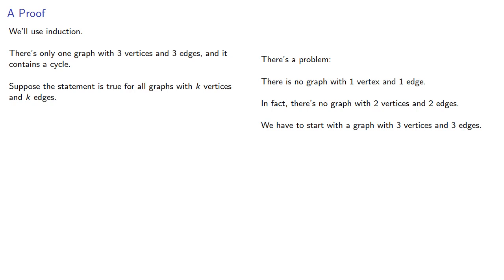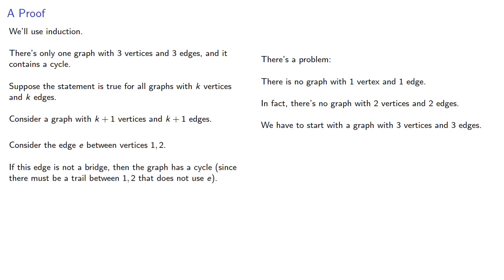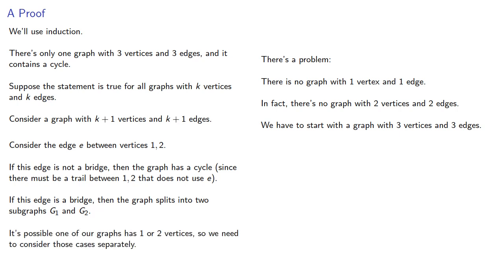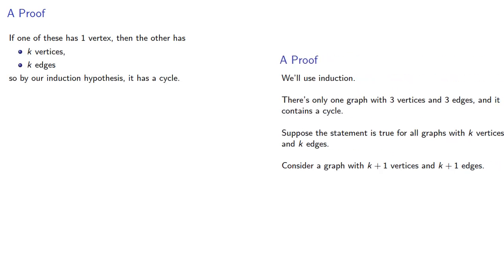Suppose the statement is true for all graphs with k vertices and k edges. Let's consider a graph with k+1 vertices and k+1 edges, and consider the edge between vertices 1 and 2. If this edge is not a bridge, then our graph must have a cycle since there must be an alternate route between vertices 1 and 2 that does not use this edge. If the edge is a bridge, the graph splits into two subgraphs g1 and g2. Here's why starting our induction at n=3 requires additional steps: it's possible that one of our graphs has one or two vertices. If one subgraph has one vertex, the remainder has k vertices and k edges, and by our induction hypothesis, it has a cycle.